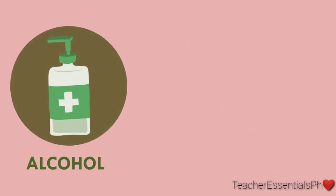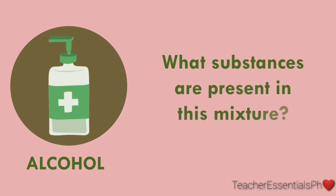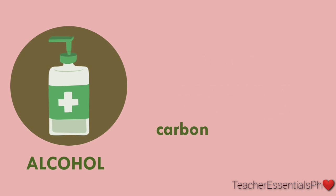Let's start with alcohol. What substances are present in this mixture? To make an alcohol, you need a carbon, an oxygen, and a hydrogen.